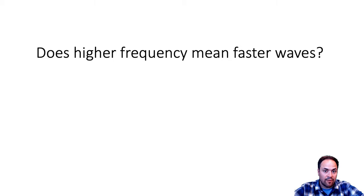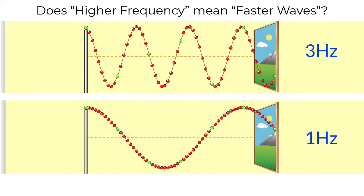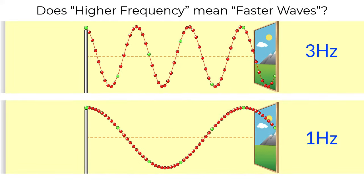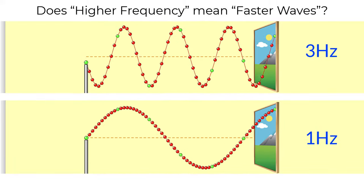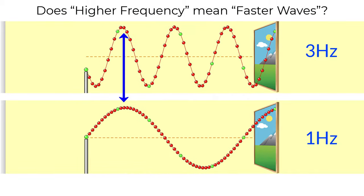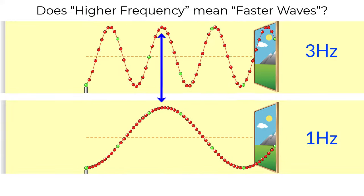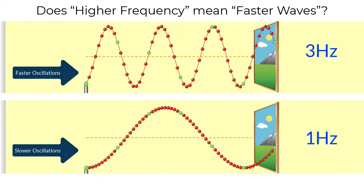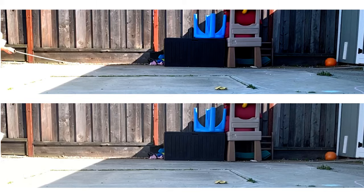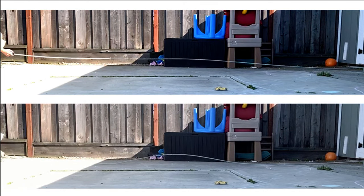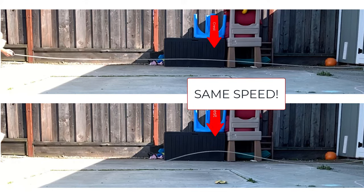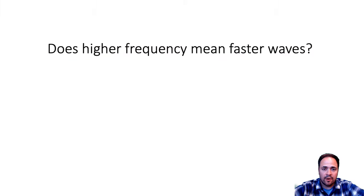Does higher frequency mean waves move faster? In the simulation, the top wave is at three hertz and the bottom at one hertz. More waves per second cross a point on the top, but if you watch the crests of both waves, they move at the exact same speed. Wave speed does not vary with frequency. What changes with frequency is the number of oscillations per second by the source — not the speed.